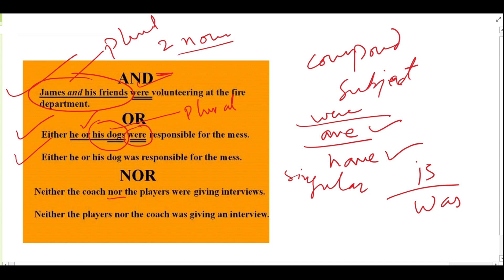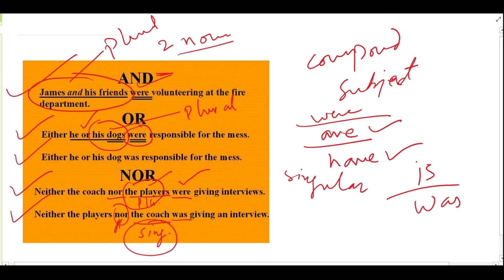The same rule applies with nor. After nor, focus on the subject: if it is plural, use a plural verb; if it is singular, use a singular verb. For example: 'Neither the coach nor the players were...' — players is plural, so we use were. But 'Neither the players nor the coach was...' — coach is singular, so we use was. I hope you understand all the points discussed. Thank you.